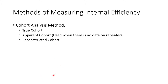The apparent cohort method is used when you do not have data for repeaters. This method should not be used where automatic promotion is in place, because what it entails is that a student is either promoted or drops out — but in reality there will always be repeaters.